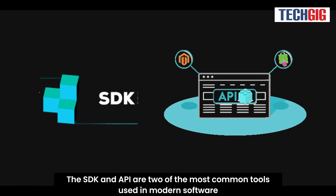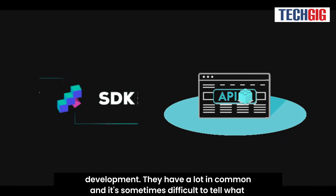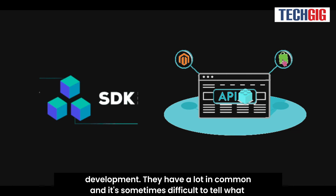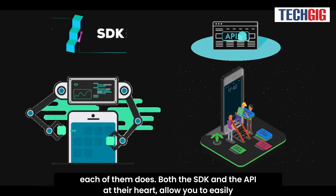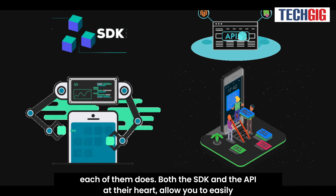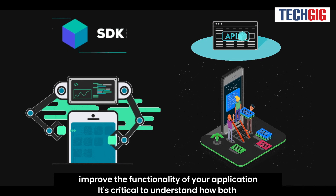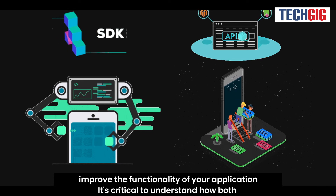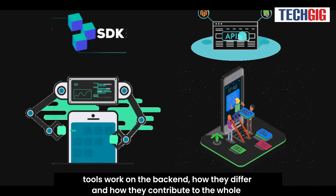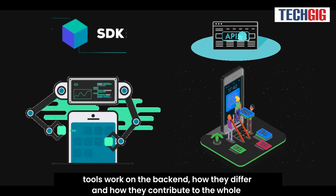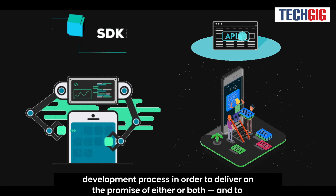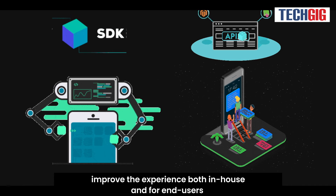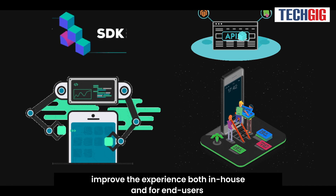The SDK and API are two of the most common tools used in modern software development. They have a lot in common, and it's sometimes difficult to tell what each of them does. Both the SDK and the API, at their heart, allow you to easily improve the functionality of your application. It's critical to understand how both tools work on the backend, how they differ, and how they contribute to the whole development process, in order to improve the experience both in-house and for end-users.